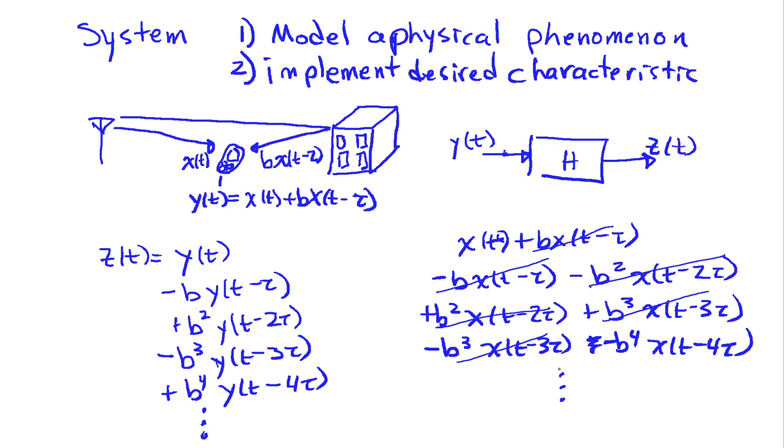Eventually, I'm going to cancel out more and more terms. Now for this to work, we're going to have to have b have magnitude less than 1, because we've got b, b squared, b cubed, b fourth. If b is magnitude less than 1, then this is going to be decreasing. If it were greater than 1, it would be increasing, and that would be a problem. So eventually we have some term over here which is very small, it's delayed a long ways, and we effectively have used our system to implement a desired characteristic to the signal. We remove the echo.